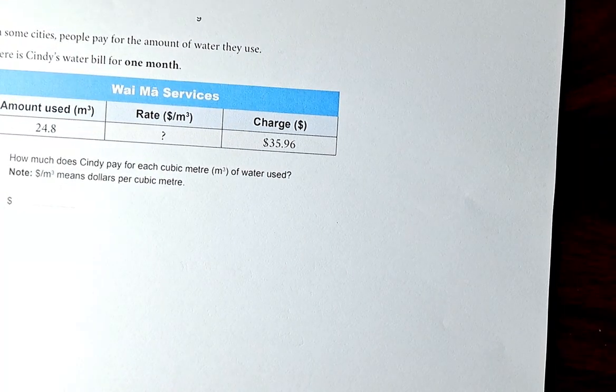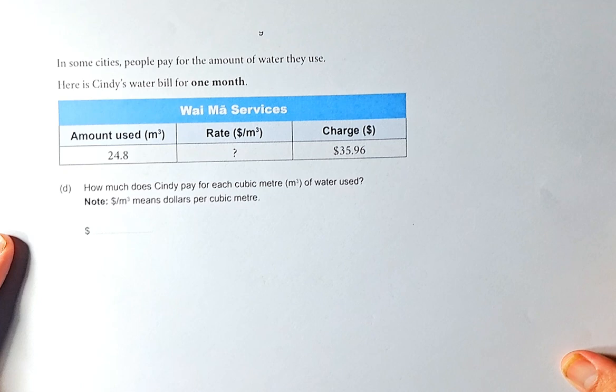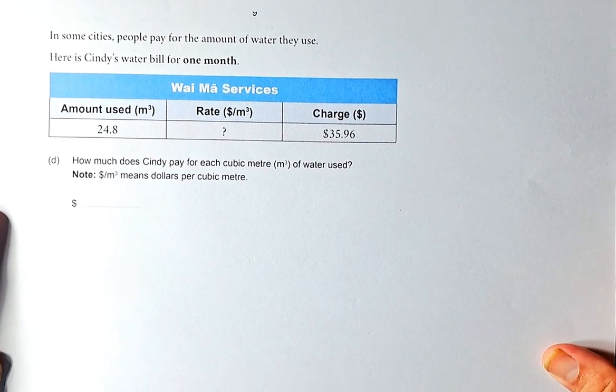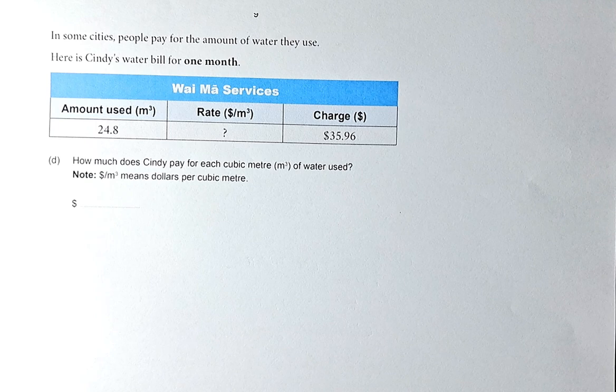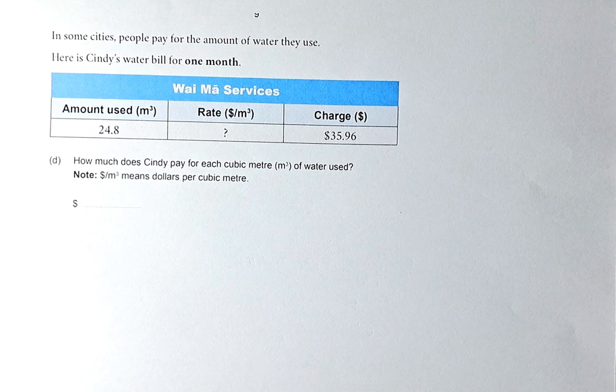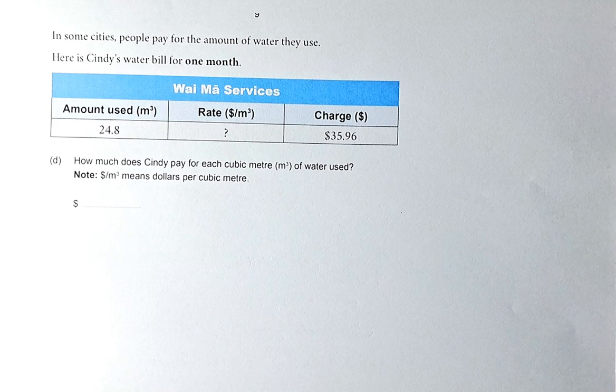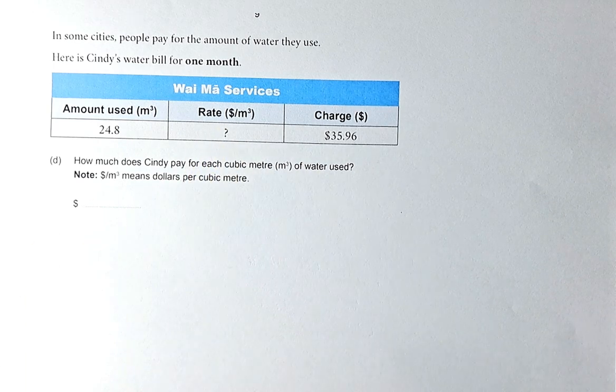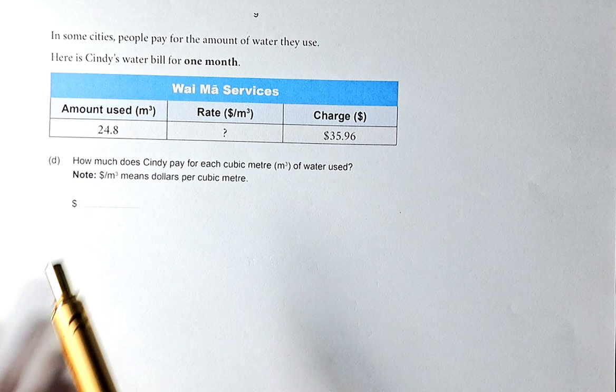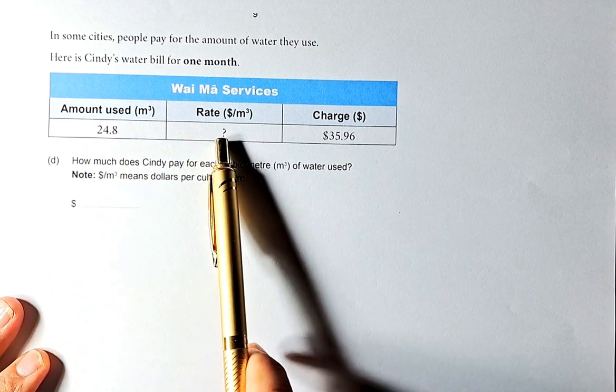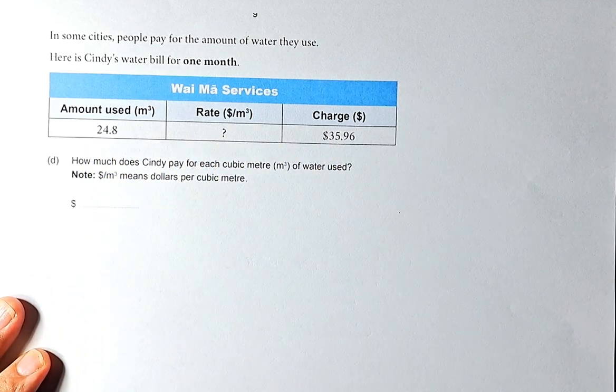Question 3D is quite straightforward. In some cities, people pay for the amount of water they use. Here is Cindy's water bill for one month. The amount used is 24.8 cubic meters, the rate is a question mark you need to find out, and the charge is $35.96. In other words, 24.8 times the rate will give you $35.96.